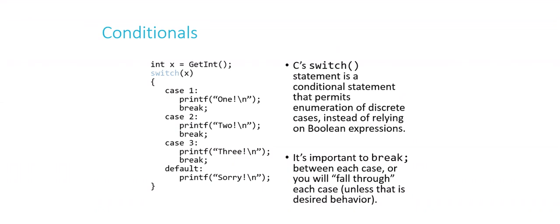So I say int x equals get int, and if you're not familiar yet, get int is a function that is also included in the CS50 library. So if you pound include CS50.h, you'll have access to get int, and all of its cousins, get float, get string, and so on.